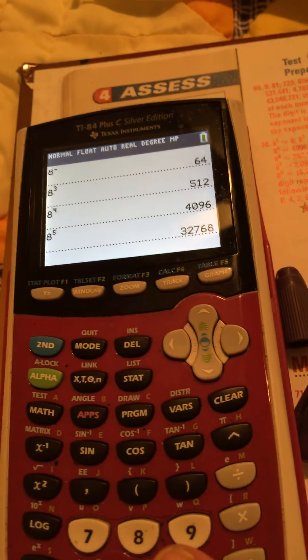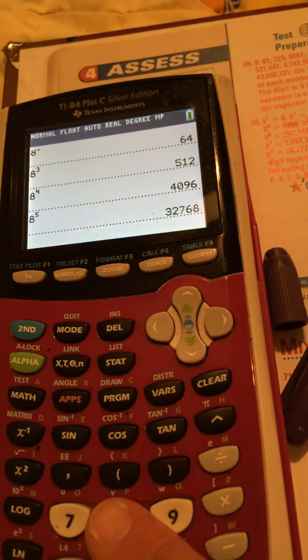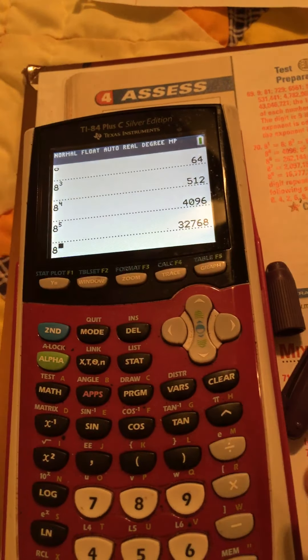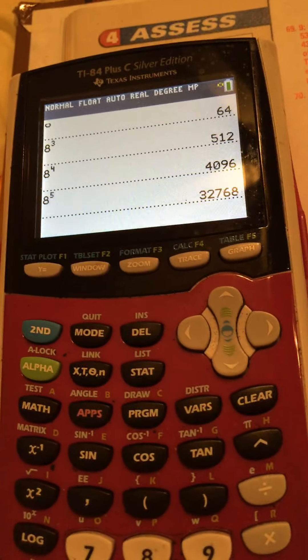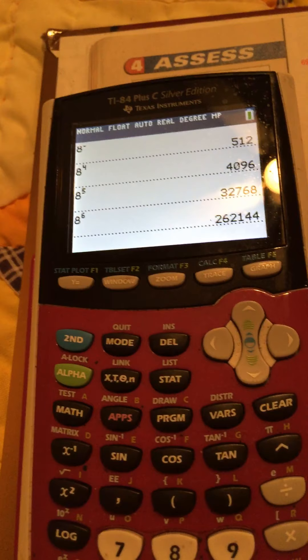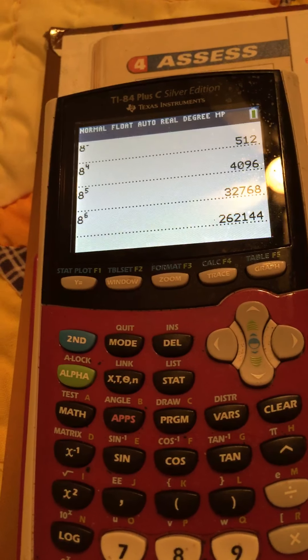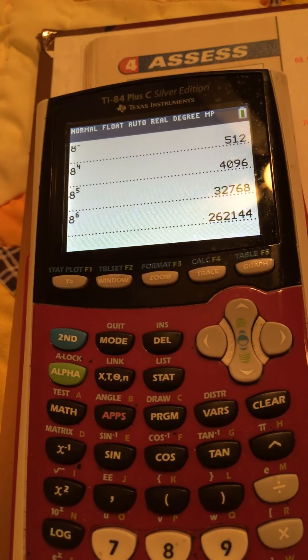Okay, now let's do the next one. It's going to be eight to the sixth power. Eight right there. Up arrow. Six. Eight to the sixth power. Enter. And it is 262144.